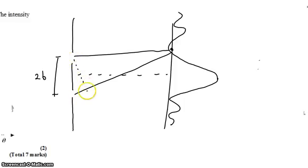And at the first minimum, that path difference is the same lambda on 2. So we get to say again that sine of theta equals lambda on 2.